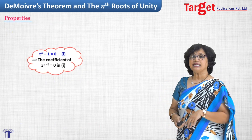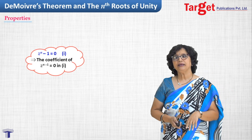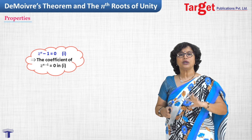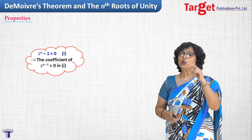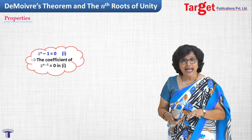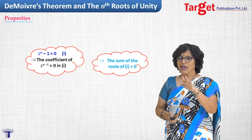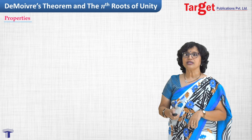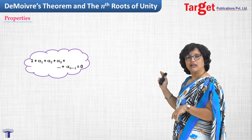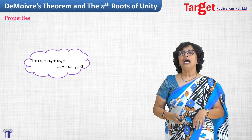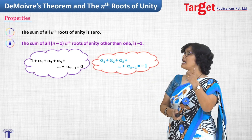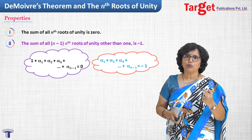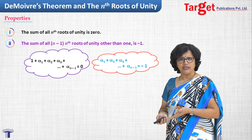Now let us take properties about nth roots of unity. Looking at z^n - 1 = 0, there is no term of z^(n-1), so the coefficient of z^(n-1) is 0, and hence the sum of the roots is 0. So 1 + alpha_1 + alpha_2 + alpha_3 + ... + alpha_(n-1) = 0, or equivalently alpha_1 + alpha_2 + ... + alpha_(n-1) = -1. These two properties go hand in hand.